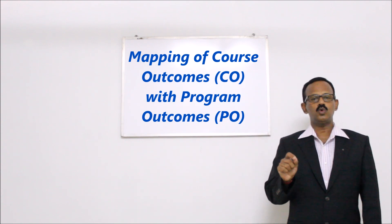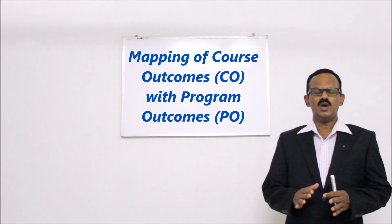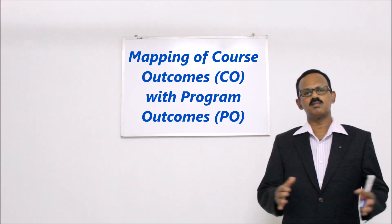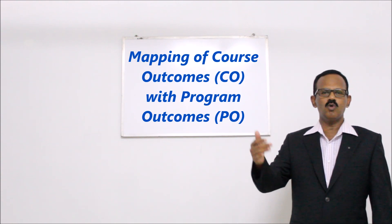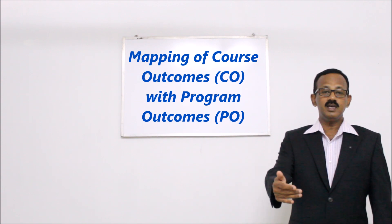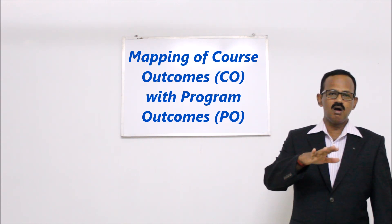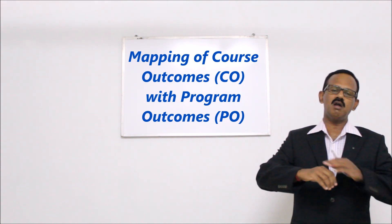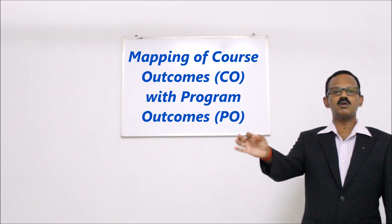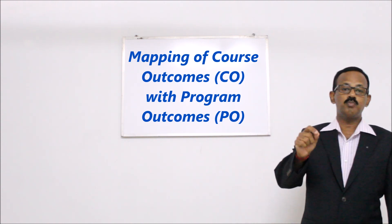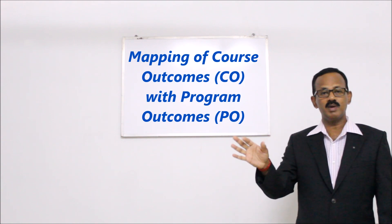Apart from this, two to four program specific outcomes will also be added. The main purpose of the entire outcome based education process is that there are twelve program outcomes and two to four program specific outcomes, and this is the target for the entire program. The entire program, through all its theory courses, practical courses, and everything done in four years, has the objective that a person graduating should possess the twelve program outcomes and two to four program specific outcomes by the time of graduation.